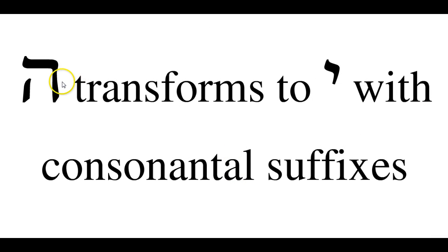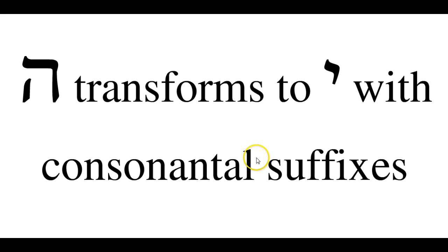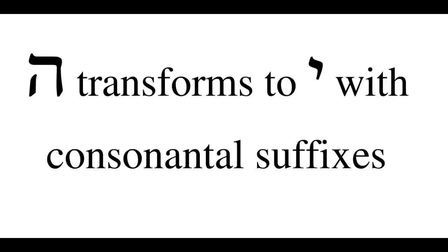Another rule: the hay, which is the third root letter, will transform into a yud with consonantal suffixes. The consonantal suffixes are the suffixes beginning with a consonant — such as ti in the verb katavti meaning 'I wrote', or tem in katavtem. Because those suffixes begin with a consonant, we call them consonantal suffixes. So in those situations, the hay which is the third root letter will transform to a yud.